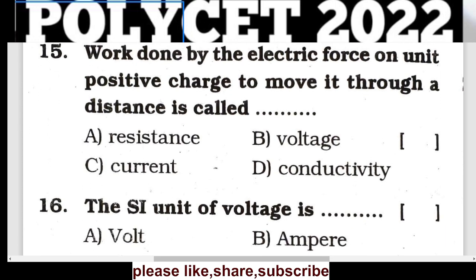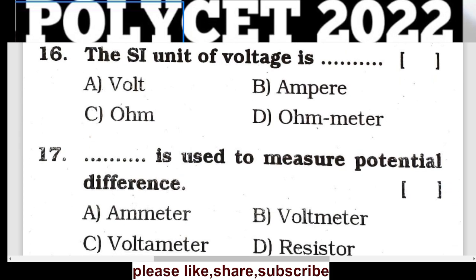Question 15: The work done by the electric force on a unit positive charge to move it through a distance is called voltage or potential difference. This is the definition of voltage. The SI unit of voltage is volts.